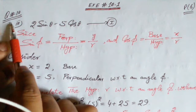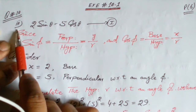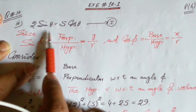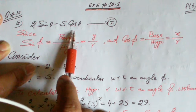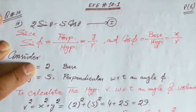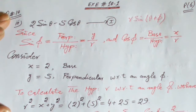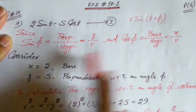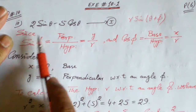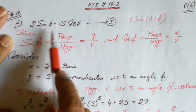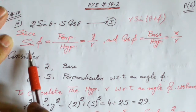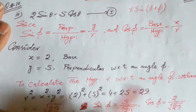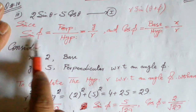Exercise 10.1, question number three: to convert 2sin(θ) minus 5cos(θ) into the form r·sin(θ + φ). For the calculation, we first revise some formulas.